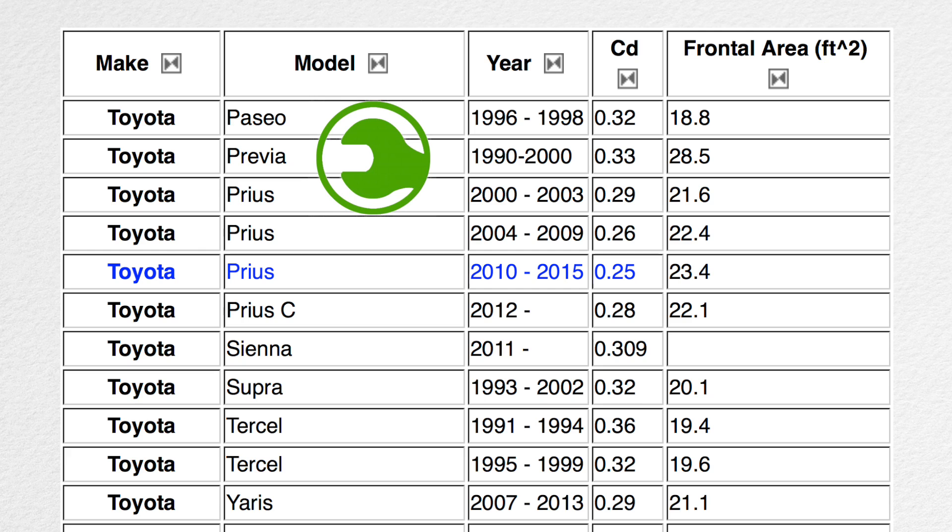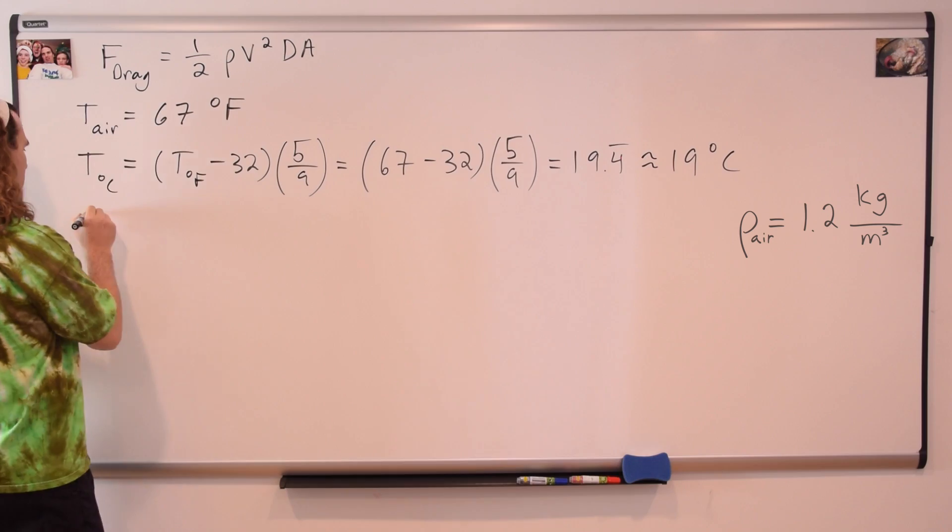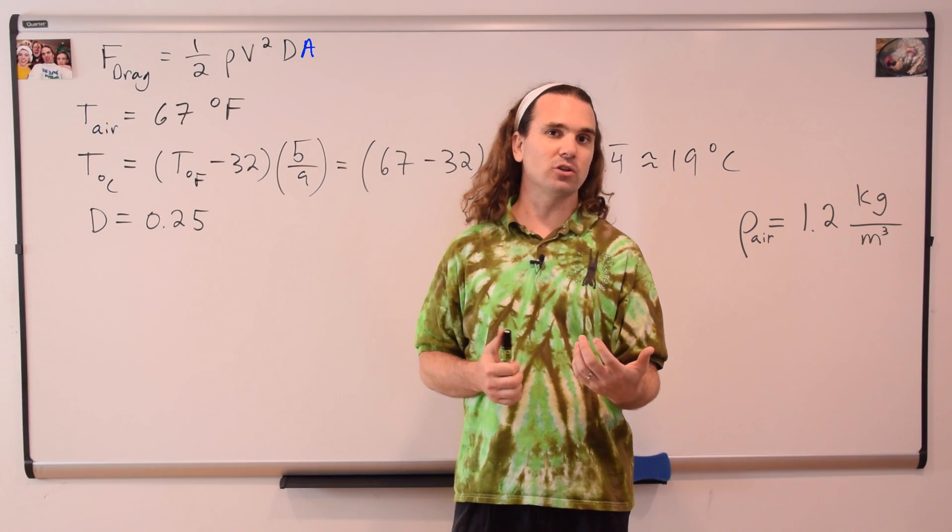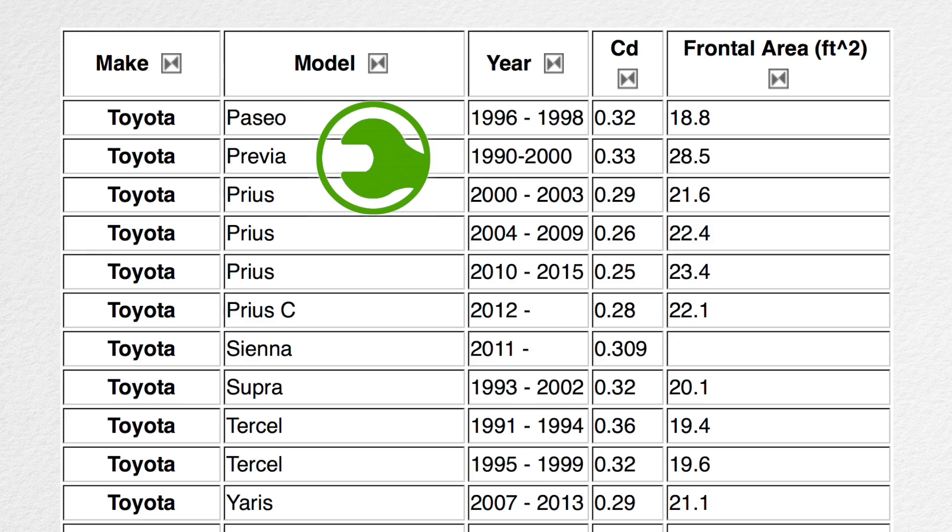which is, if you look at the list, one of the lowest drag coefficients listed for a typical automobile. A, the cross-sectional area, or the area perpendicular to the direction the object is moving, is also listed on EcoModder. It is 23.4 feet squared.